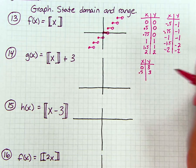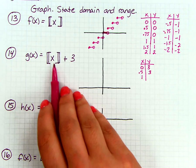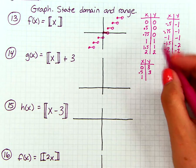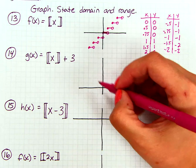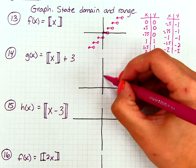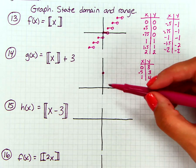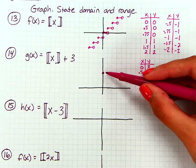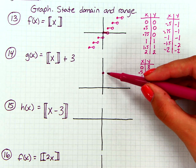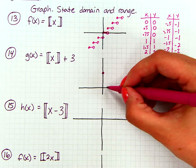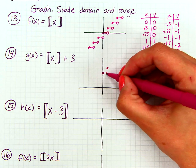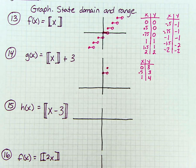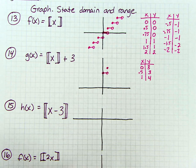It looks like it won't change until I get to 1. Substituting 1: we round to 1, and 1 + 3 = 4. So at x = 0 I plot a solid dot at y = 3, draw a horizontal line, and at x = 1 I put an open circle at y = 3 and a solid dot at y = 4.